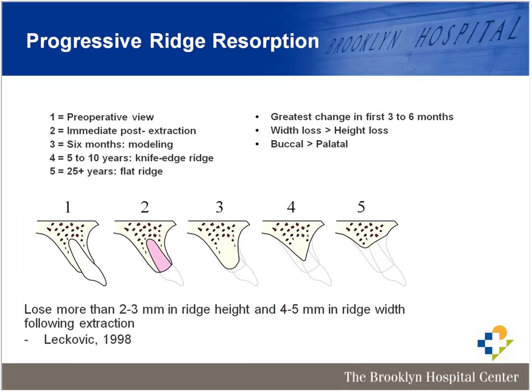Site preservation simply means maintaining the alveolus so that it does not undergo resorption, both horizontally and vertically, to allow it to be a solid, stable, bony foundation for the placement of implants. Literature has shown that, given time, there will be a significant transition from the pre-surgical extraction site to a gradual diminution of bone. This is a biological reality that will happen even if the jaw is not loaded by a denture, with the greatest change occurring within the first three to six months.